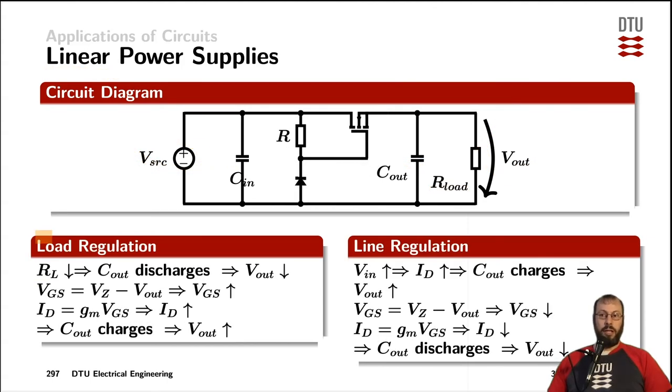If the load changes, we call that load regulation of a power supply. If the load resistance, for example, drops, the output capacitor is starting to get discharged and therefore the voltage across that capacitor, which is the output voltage, also decreases. The voltage reference provided by the Zener diode here is an extremely stable voltage and Kirchhoff's voltage law involves the gate source voltage of the transistor here and through the output voltage, the loop is closed. So if Vout is actually decreasing, it acts as a negative feedback for the gate source voltage, taking into account that the Zener diode voltage here is a very stable voltage reference. That means, in this case, the gate source voltage is rising.